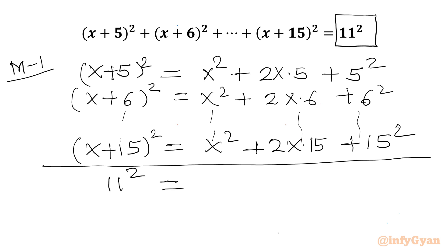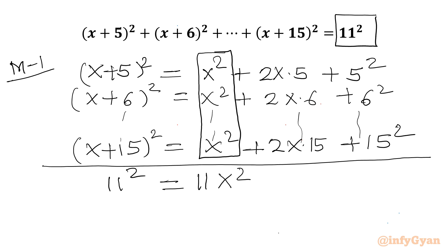Now we add up all the x² terms. Counting from x+5 to x+15, there are 11 brackets, so we have 11x². Then we have a +2x multiplied by the bracket (5 + 6 + 7 + ... + 15).